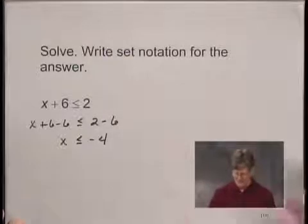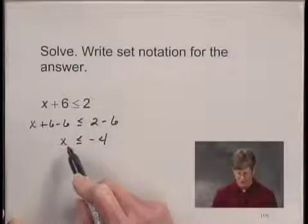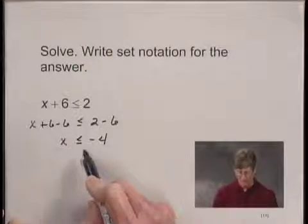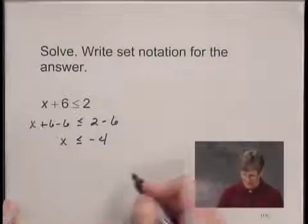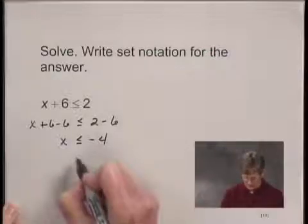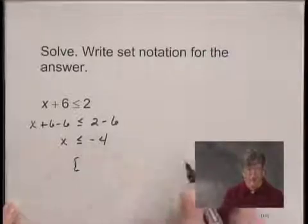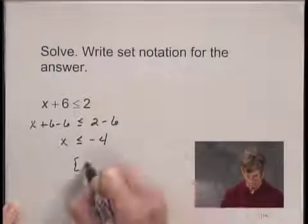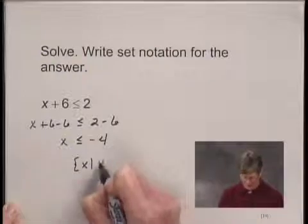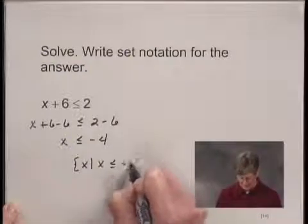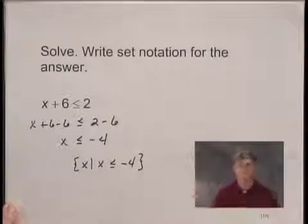So this tells me that the solutions are all of the numbers less than or equal to negative 4, and I can write the solution set in set notation as the set of all x such that x is less than or equal to negative 4.